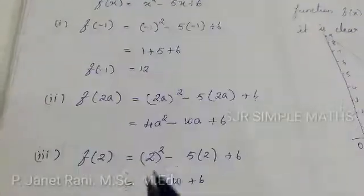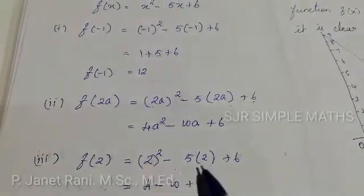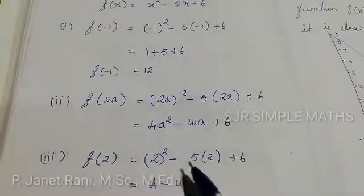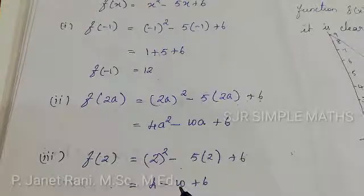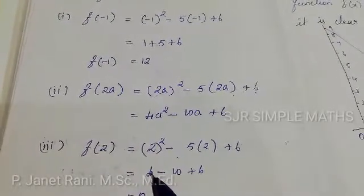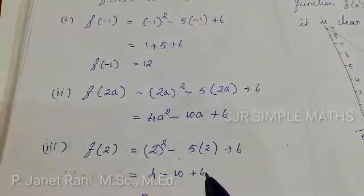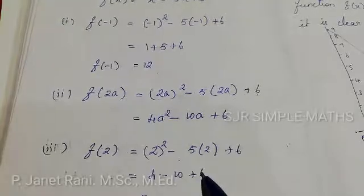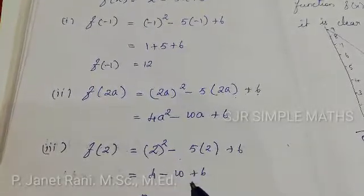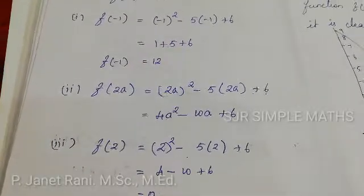Third: f(2). Substitute x = 2. f(2) = 2² - 5(2) + 6 = 4 - 10 + 6 = 0.